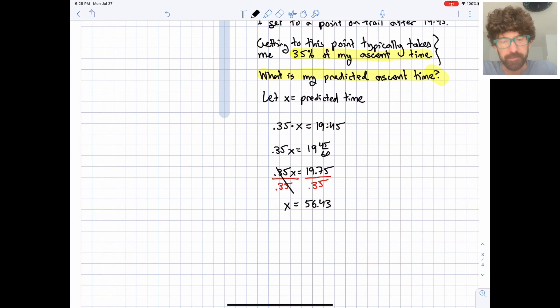So you might think again that this is 56 minutes and 43 seconds. It's not. It's 56 minutes and 43 hundredths of a minute. So let's find out how many seconds that is. We will do .43 times 60 seconds in a minute, and I get 25.8 seconds.